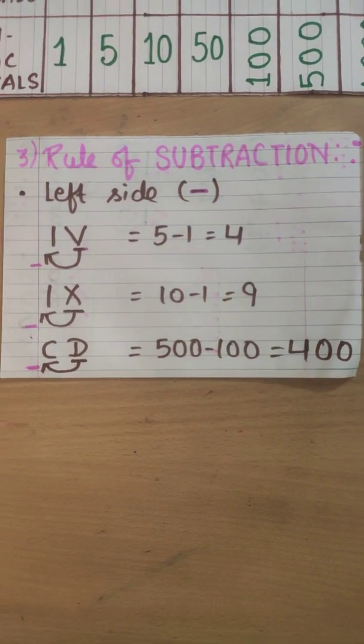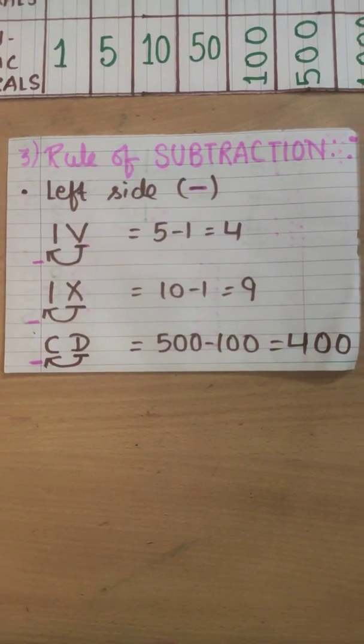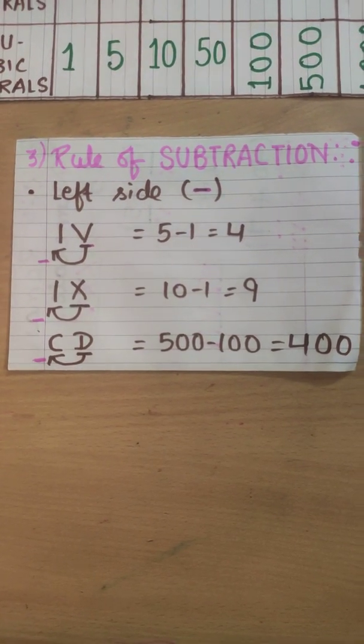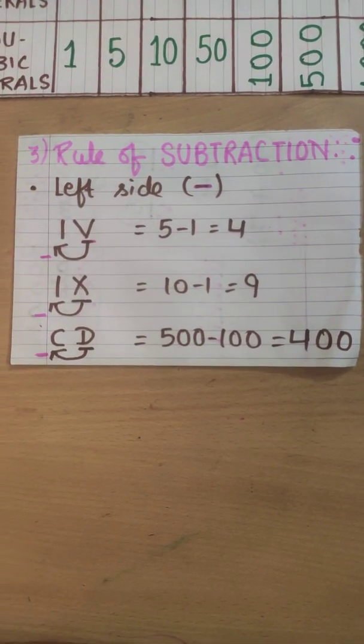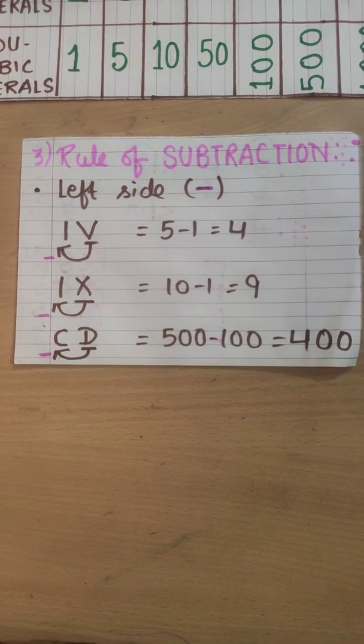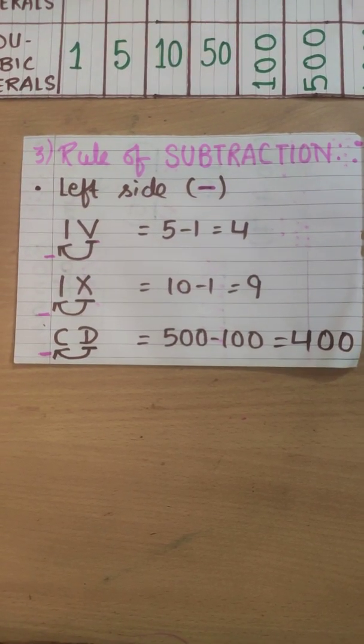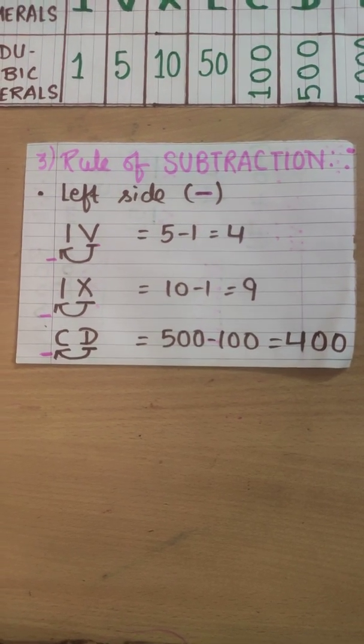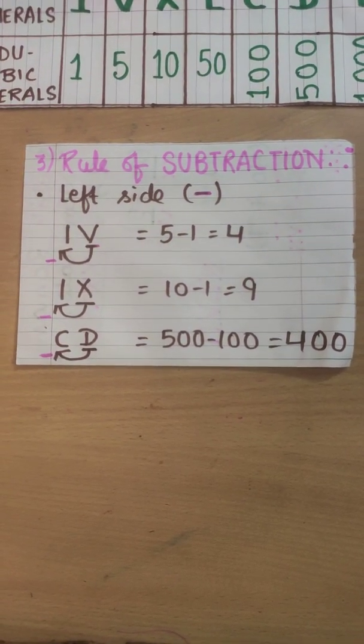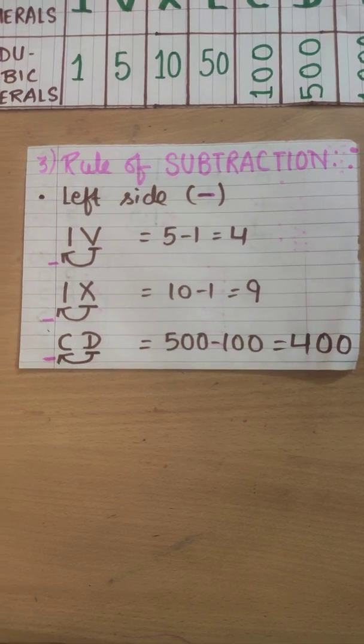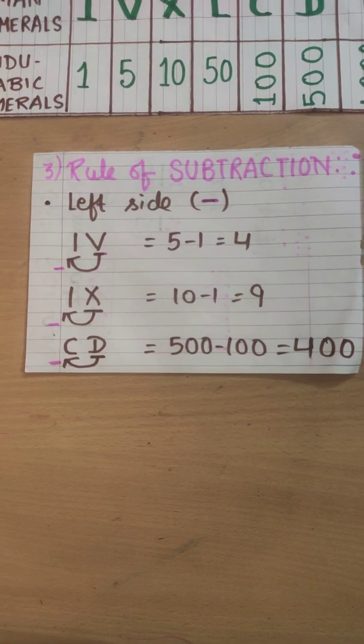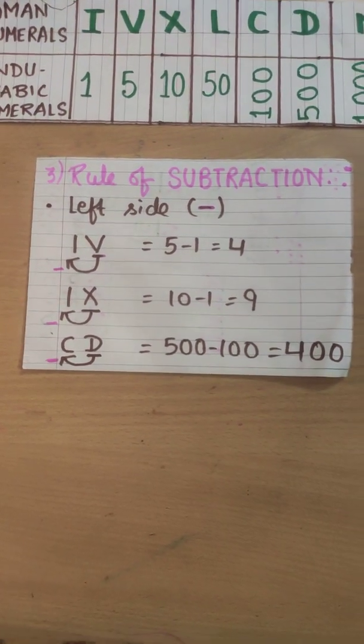Next is our rule of subtraction. Here also we will find the greater symbol. Like IV. The greater symbol is V. Let's find the other symbol is in left or right side. It's in left side. Whenever the symbol is in left side, we are here to subtract it from the greater symbol. Like V, 5, minus because it's in left side, I means 1. 5 minus 1 equals to 4.